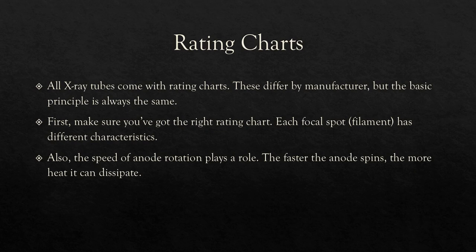Every X-ray tube comes with a tube rating chart. These things differ by manufacturer, but the basic premise is always the same. You look at your tube rating chart — it's going to have some lines and curves, and you just plot on the chart where your technique lies. If it's below the curve, you're good. If you're above the curve, chances are you're not going to be able to make that exposure. Every tube has at least one rating chart because there's a separate chart for small filament and large filament. The faster your anode can spin, the more heat your tube can tolerate, so you'll have to look at the chart for your correct focal spot size and anode rotation.